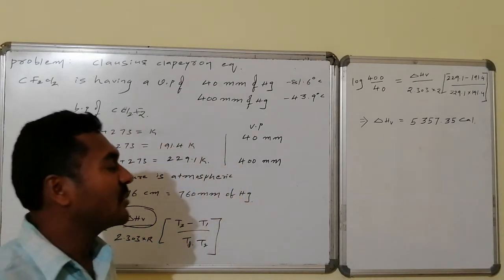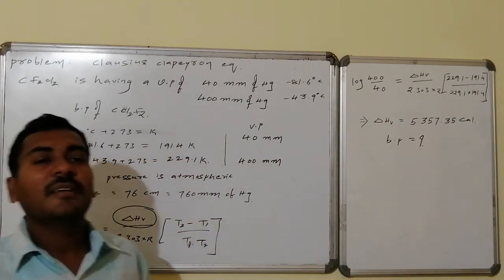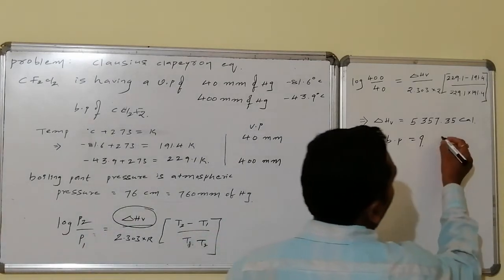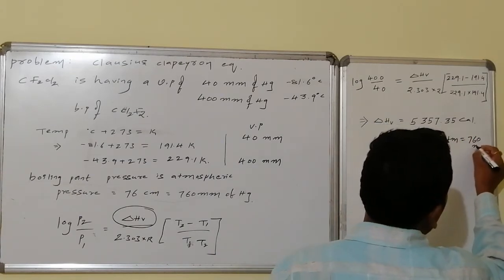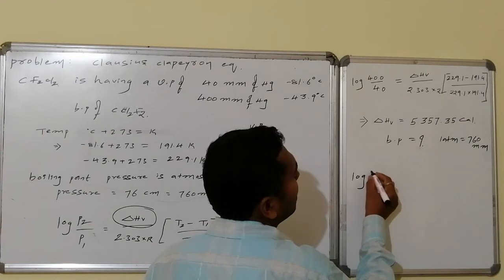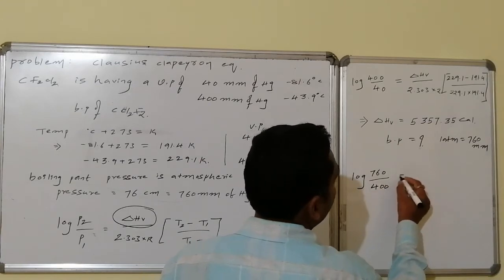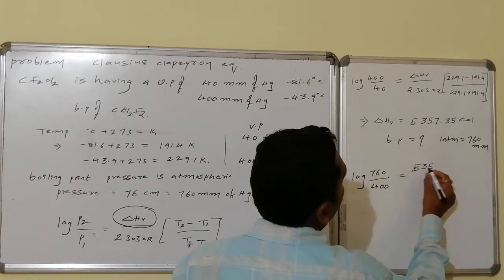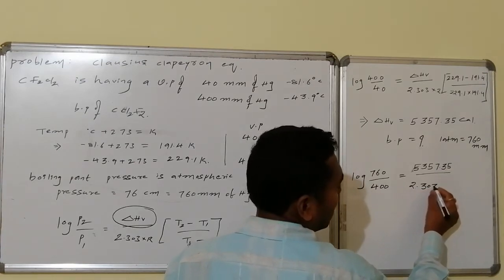Now that ΔH of vaporization is known, we calculate the boiling point. The boiling point is the temperature at which vapor pressure equals 1 atmospheric pressure, that is 760 mmHg. Substituting into the Clausius-Clapeyron equation: log(760/400) = 5357.35 / (2.303 × 2) × (Tb - 229.1)/(Tb × 229.1).